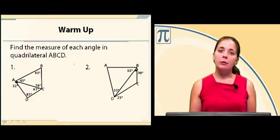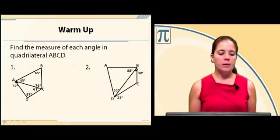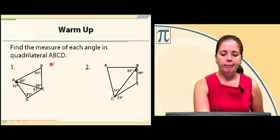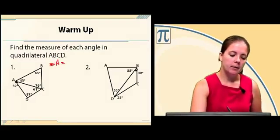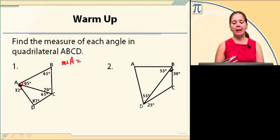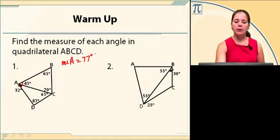We're going to find the measure of each angle in quadrilateral ABCD. So the first angle, let's find the measure of angle A. Measure of angle A looks like it's going to be 32 plus 45, and if we take 32 and add 45 to it, we get 77 degrees.